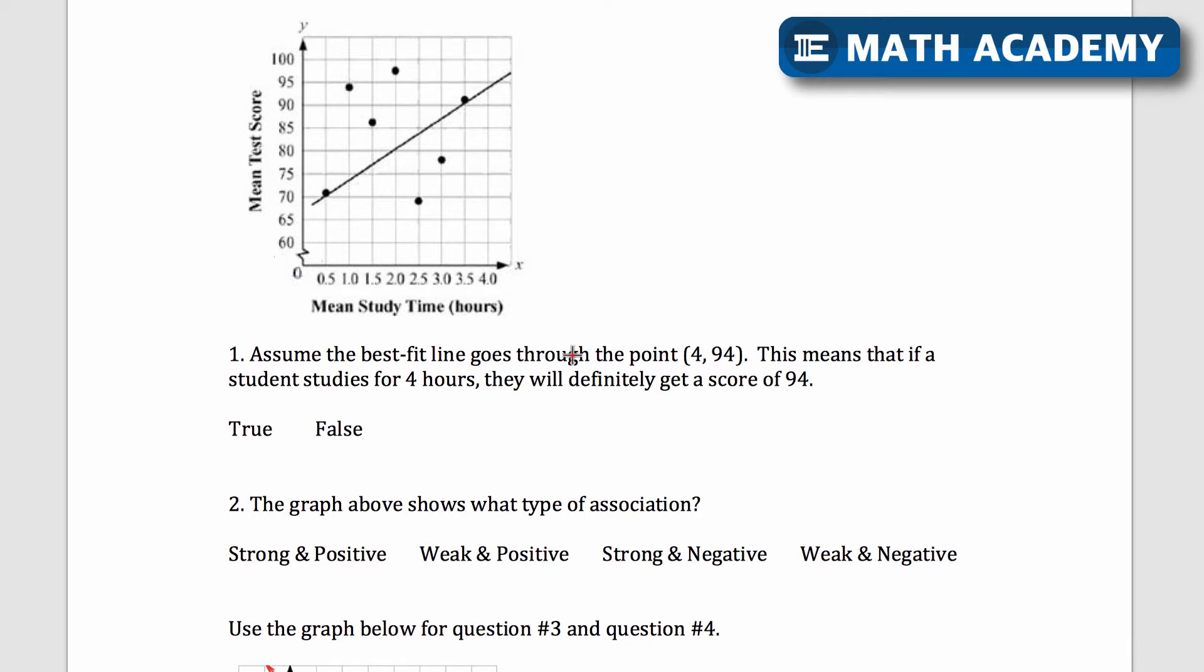Okay with that said let's go on to question number one. Assume the best-fit line goes through the point 4, 94. This means that if a student studies for four hours they will definitely get a score of 94. Well this is a line of best fit and it's the best estimate for the points that you get on this graph. It's the closest line to all these points on average. It's just an estimate, it doesn't mean you'll definitely get that. So I'll say false on that.